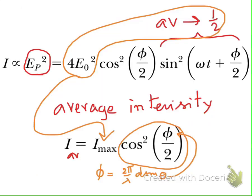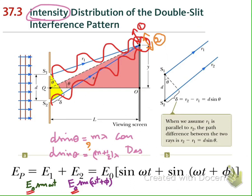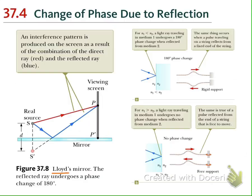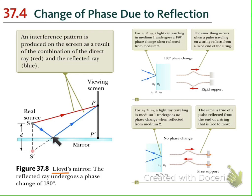Before, when we do the double slit experiment, we have the light source and it passes through slits to create two light sources, and we look at the interference pattern on the screen. But in Lloyd's experiment, we have only one light source and a mirror. We have light from the source and also the image of the source in the mirror. This image also sends light to the screen — we have the direct light from the source to a point, and light from the source reflected by the mirror to the same point. It is equivalent to having light from the source and from its image going to the same point.